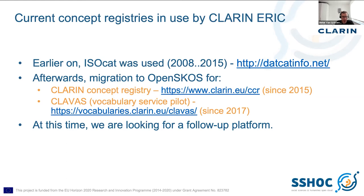In addition to that, the CLAVAS vocabulary service was launched, also based on OpenSKOS, largely inspired by colleagues from the Dutch CLARIN or CLARIA project. Also still around — you can find the URL here — it was launched in 2017 with the idea of providing support for longer or larger controlled vocabularies to be entered in metadata descriptions. So if you wanted to select a language code from the roughly 8,000 ISO 639-3 language codes, you could just use type-ahead and get support from the vocabulary service.